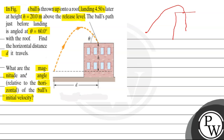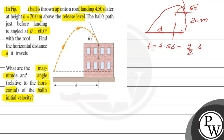The building height is 20 meters. The landing velocity vector makes 60 degrees with horizontal. The time of flight is 4.5 seconds, that is 9/2 seconds. We need to find the ball's horizontal distance d, and the initial velocity magnitude and angle theta.